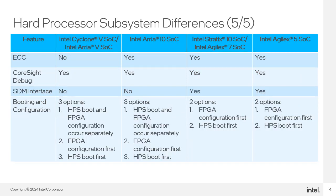Intel Agilex 5 devices feature robust error detection and correction circuitry that protects configuration RAM programming bits and M20K user memories. Configuration via Protocol (CvP) using PCIe allows you to configure Intel Agilex 5 FPGAs, simplifying board layout and increasing system integration. The embedded PCIe hard IP operates in autonomous mode before the FPGA is configured, allowing power-up and activation of the PCIe bus within the 100 millisecond time allowed by the PCIe specification.